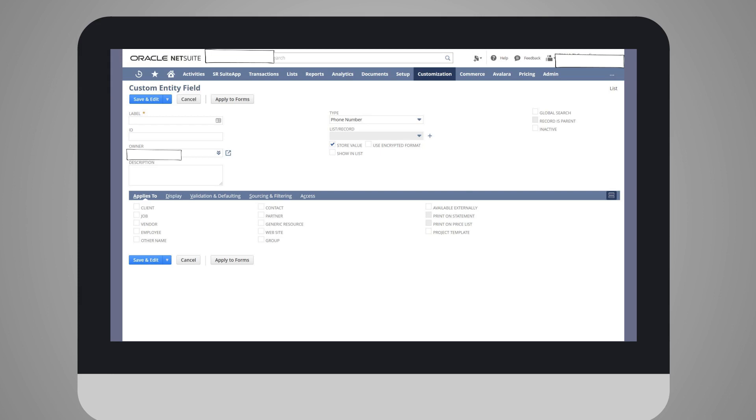Then select the type of field you need. If it is a list record field, you will also need to choose the list you want to be associated with the field. Notice that the store value checkbox is automatically checked, and unless you have a special reason for wanting values not to be stored in your new field, you should leave it checked.